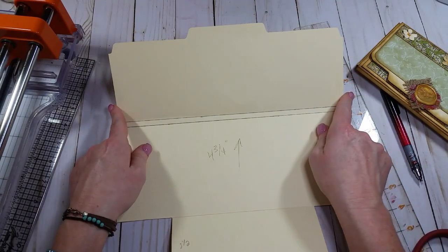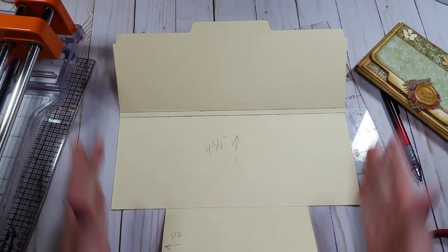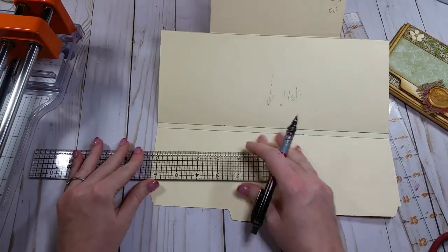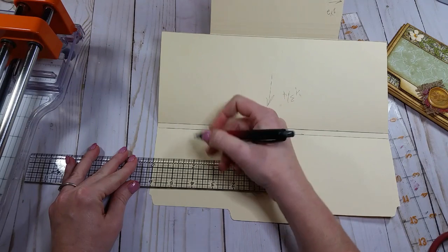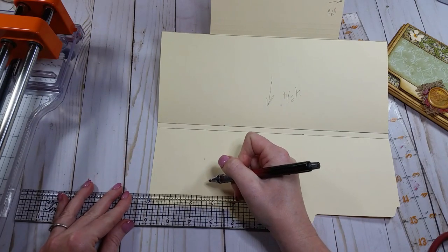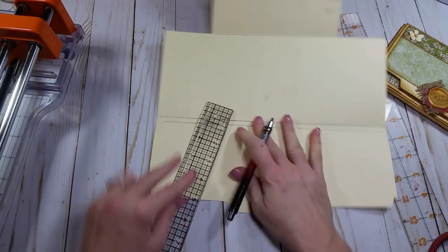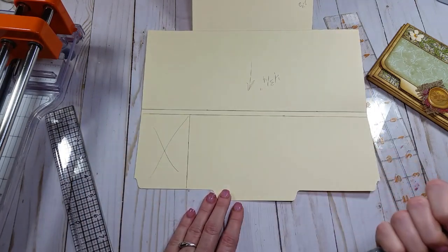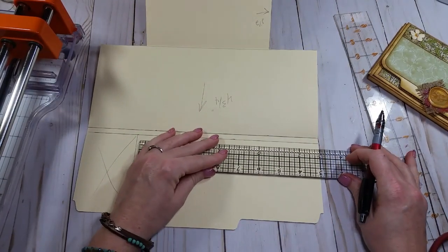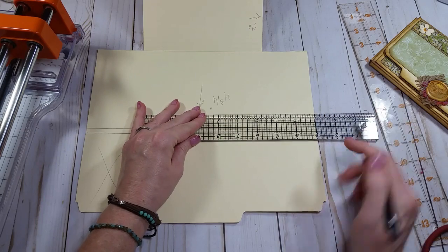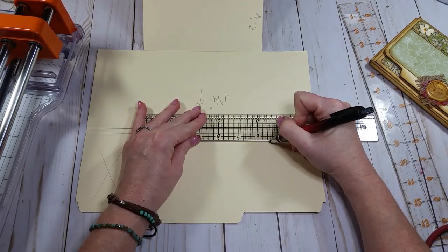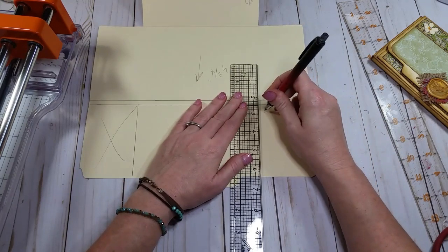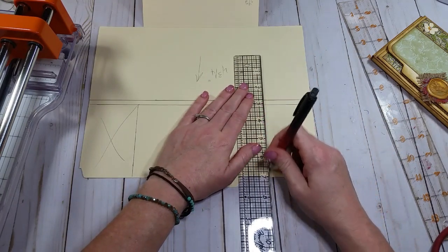Now we need to measure two and a half inches in over here on the top, just like we did down here at the bottom. One, two and a half. Two and a half. I'm going to be getting rid of that part. And coming in again, two and a half inches from the side, one, two and a half, one, two and a half.